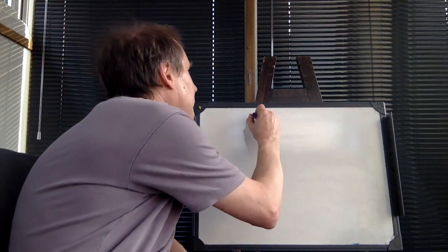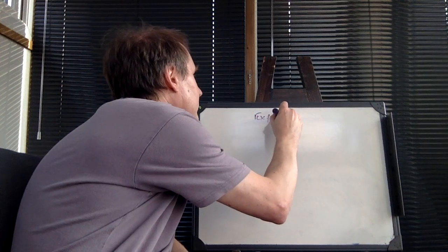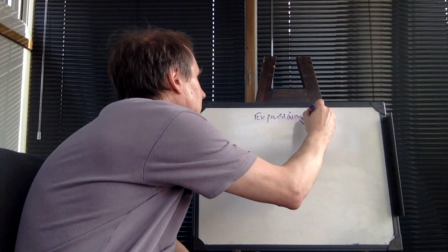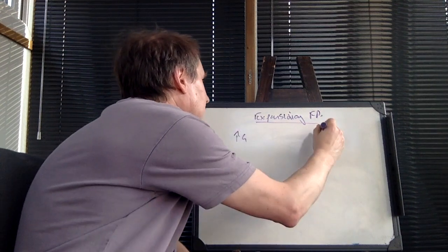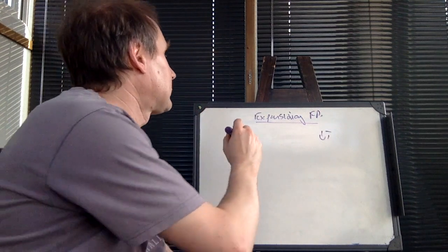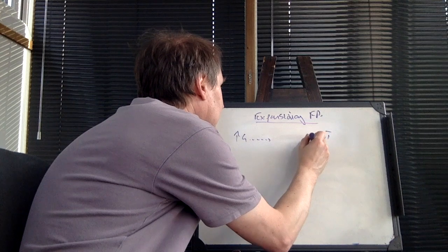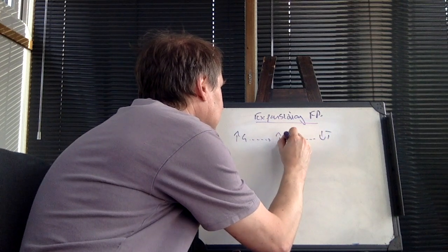So expansionary fiscal policy basically means that what you're going to do is you're either going to increase government spending or you're going to cut tax with the goal of increasing aggregate demand.